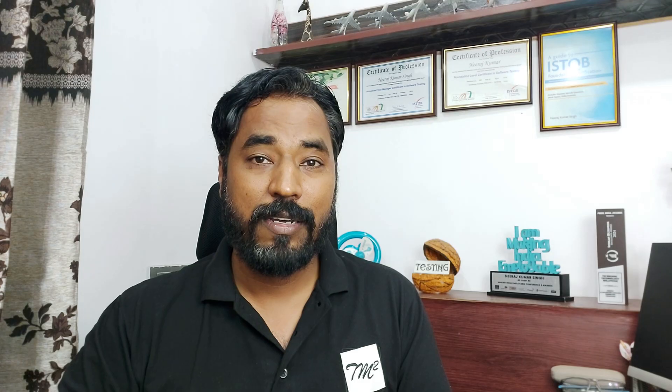The right answer for this question is D — in sequential, incremental, and iterative SDLC models. It applies everywhere and is irrespective of the SDLC model that the four good characteristics are applicable from the point of testing. With that, we just understood how exactly we can be very sharp and take a decision quickly given that you have good grip on the syllabus.